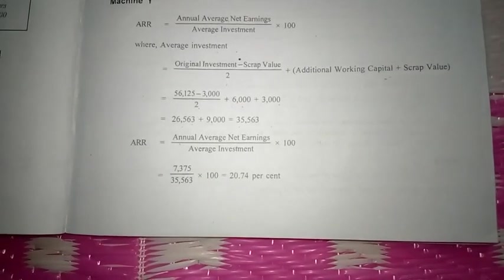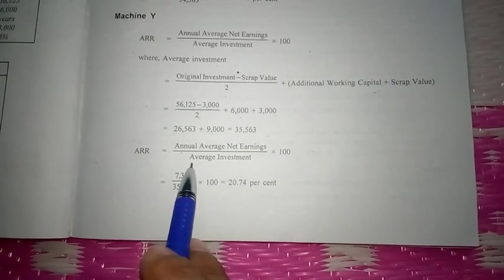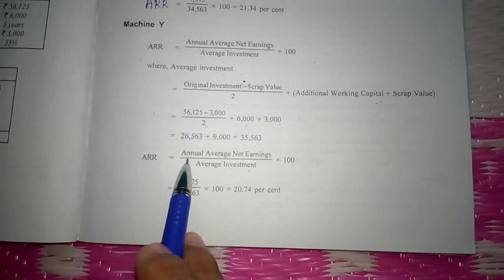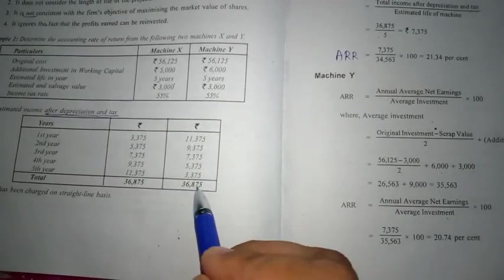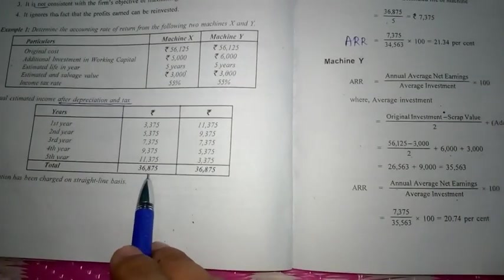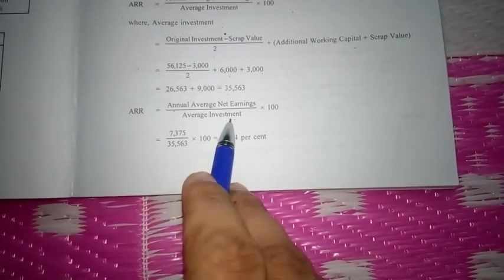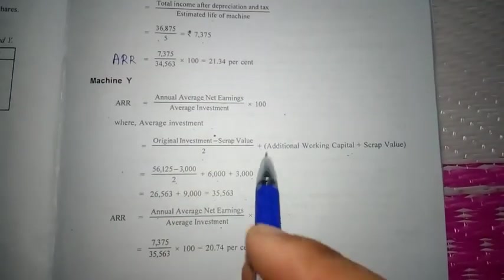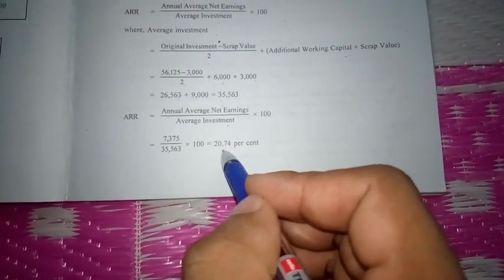Therefore, ARR for machine Y equals average annual net earnings divided by average investment. The total cash flow is also 36,875, so average net earnings are 7,375 — the same as machine X. So 7,375 divided by average investment of 35,563, multiplied by 100, gives an ARR of 20.74% for machine Y.